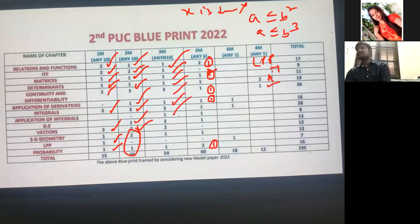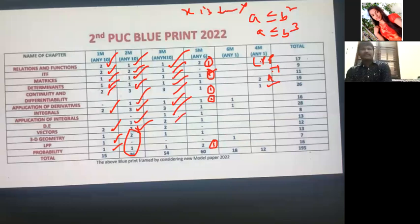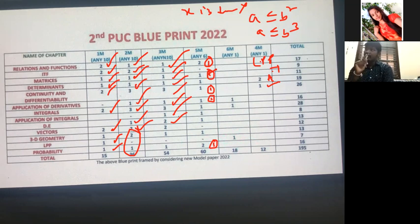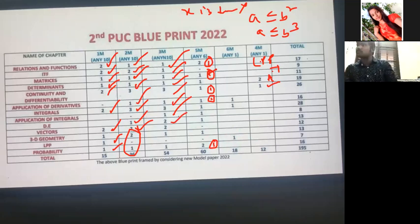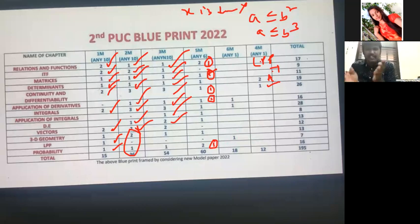For Differential Equations three-mark questions: I already discussed — parabola, or circle touching y-axis or touching x-axis type questions. For Vector Algebra three-mark questions: section formula proof — one question. Another question: if ā + b̄ + c̄ = 0, find ā·b̄ + b̄·c̄ + c̄·ā, where ā, b̄, c̄ are unit vectors. For 3D Geometry three-mark: equation of a plane passing through the intersection of two planes, or distance between parallel lines, or distance between two planes.